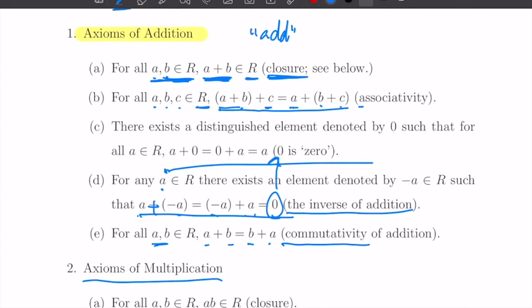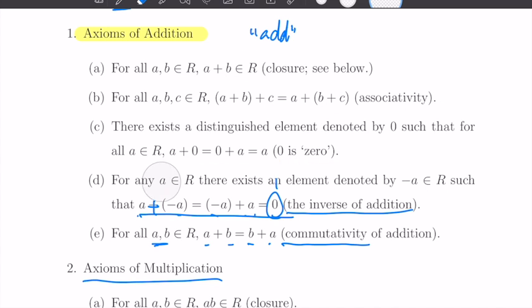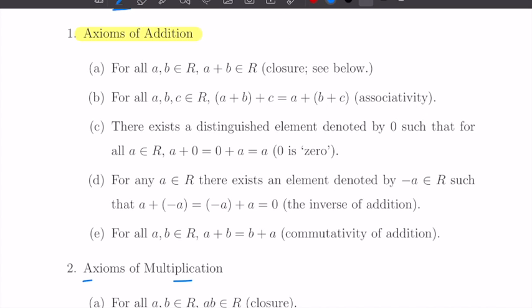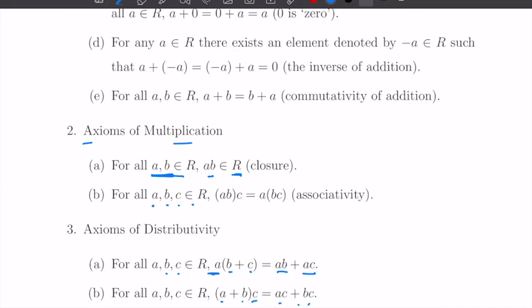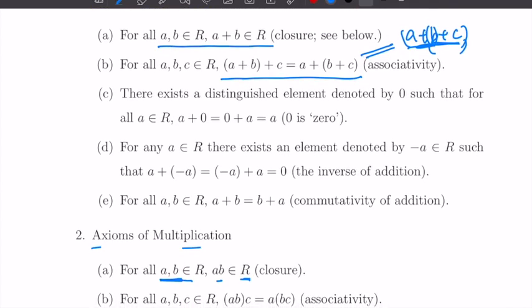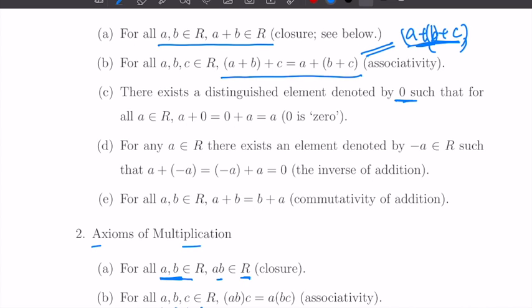Let's explain each of these a little more. Closure means the result stays in the set — otherwise it doesn't make sense. Associativity means how we add three things doesn't matter, so we just write A plus B plus C without parentheses, because the order of addition doesn't matter whether we add this first or that first.